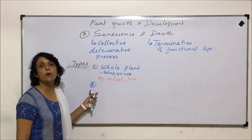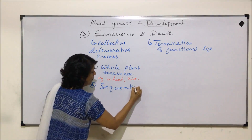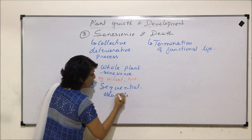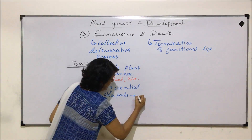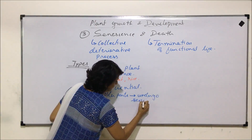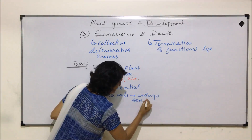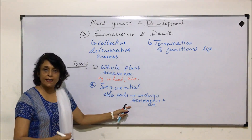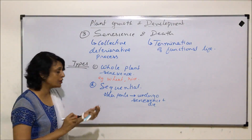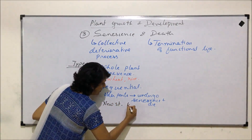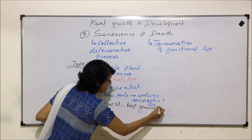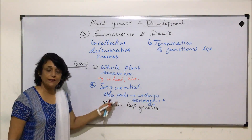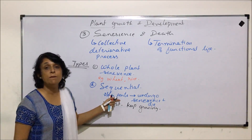This whole plant senescence is seen in annual crop plants like wheat and rice. The second type of senescence is sequential senescence. Sequential means it takes place in a sequence — the older parts undergo senescence and die, but while the older parts are aging and dying, the newer structures keep growing. There is a sequence of senescence taking place.